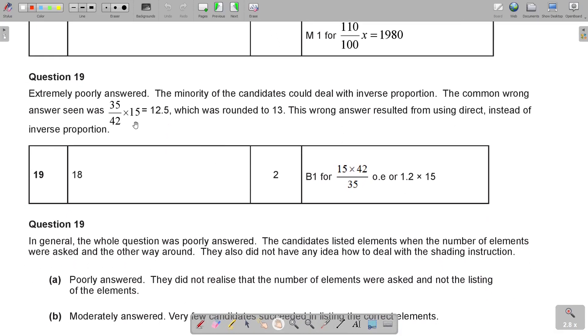Extremely poorly answered. The minority of candidates could deal with inverse proportion. The common wrong answer was, I think, that they worked on direct, which was rounded to 13. This wrong answer resulted from using direct proportion instead of inverse proportion. But 18 was the answer.